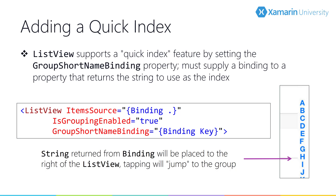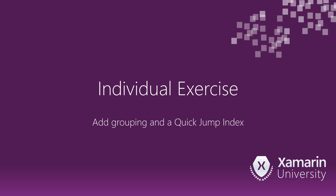The Xamarin Forms ListView also supports the quick jump index, with different appearances on each platform. On iOS it's drawn on the right-hand side of the screen; on Windows it's activated by tapping the headers, presenting a full-screen selector UI; on Android it appears when the list is scrolling. You can set this through the GroupShortNameBinding, which identifies the string for the group — whatever you return will be drawn in the index. In exercise three, we're going to add grouping and a quick jump index to our application.